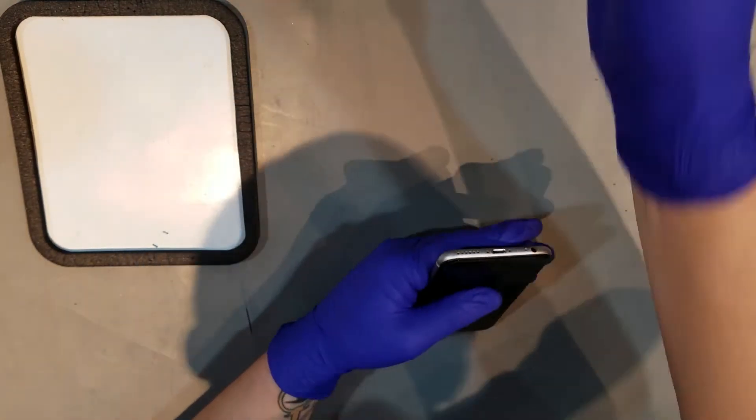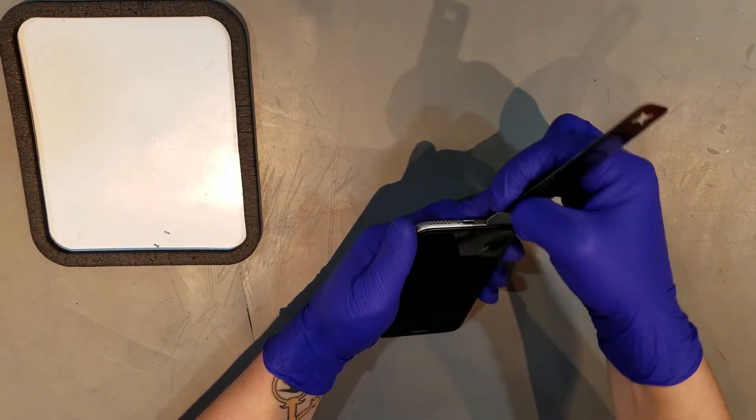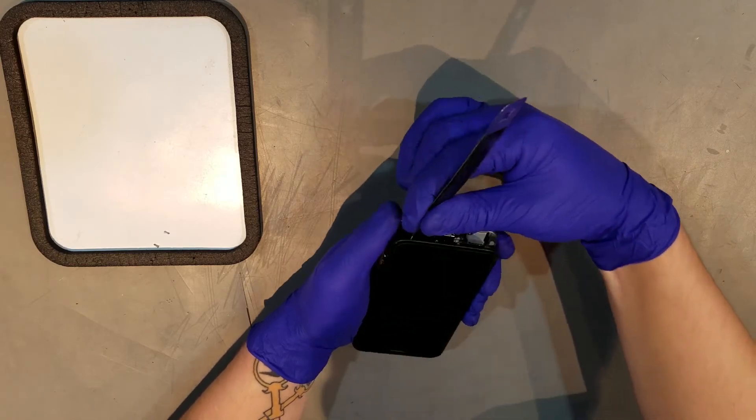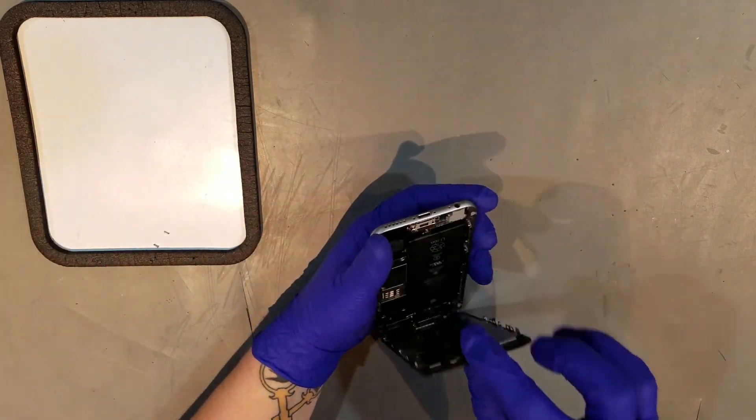After those screws are removed, you can begin to slide an opening tool in between the plastic frame and the metal back housing. You'll then have to pry and twist slightly to unseat the screen, though you may have to do the same thing on the other side to unseat it completely.